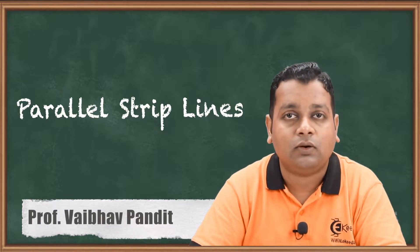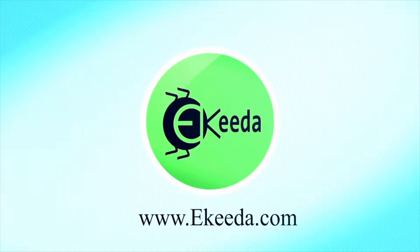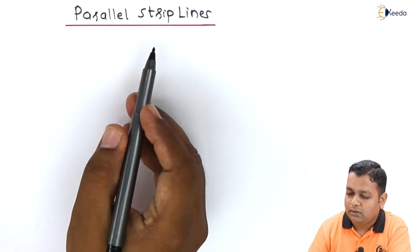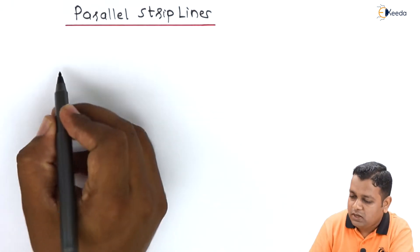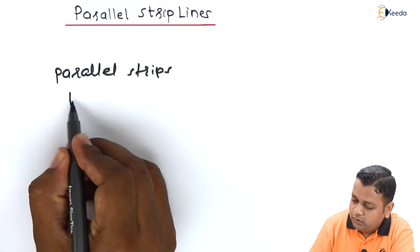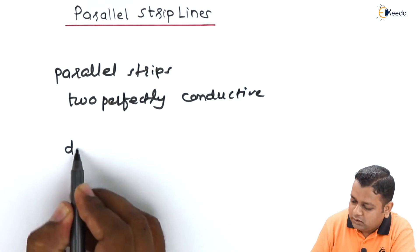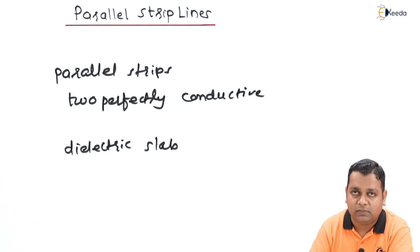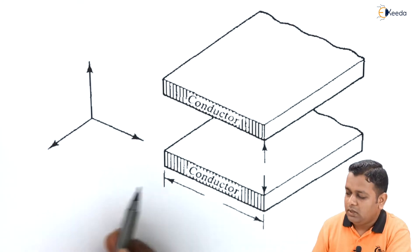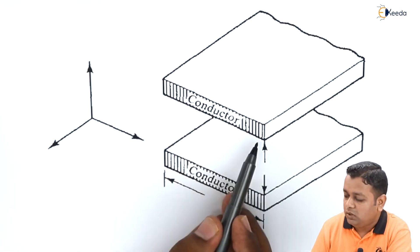Now let us address the parallel type of strip line. In the parallel strip line, as the name suggests, we have parallel strips made up of two perfectly conductive materials, separated by a dielectric slab of certain thickness. For better understanding, we use a schematic diagram of the parallel strip line, which shows the two parallel strips made up of perfect conductors, shown in cross-section with the shaded portion.